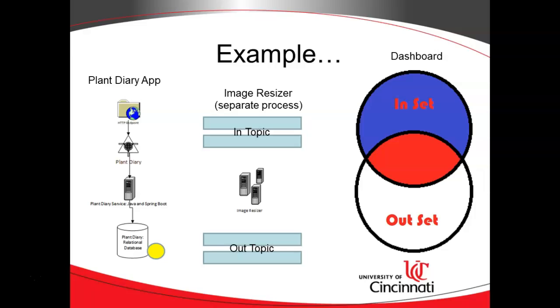Then we have an image resizer. Image resizing tends to take some time. So this is a great microservice to spawn off separately from our plant diary and even scale up by having it automatically add new instances as needed, because the image resizer just takes a picture in, resizes it, and then essentially it's done.